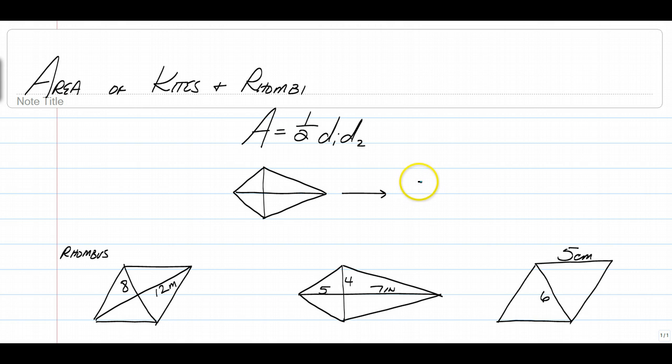If we cut this kite into two pieces, like this, we have a top triangle and we have the bottom triangle.